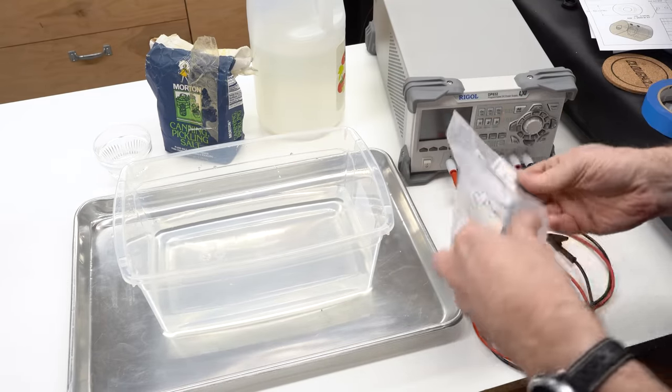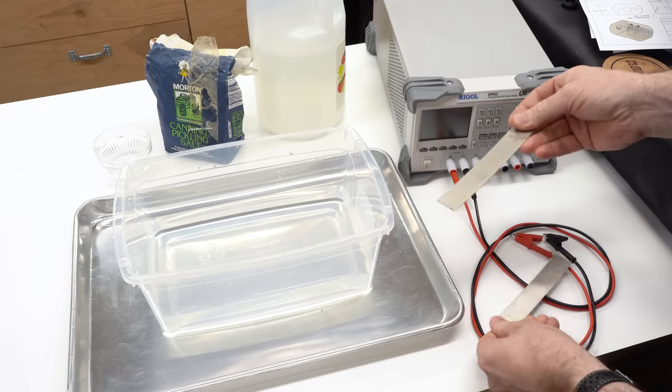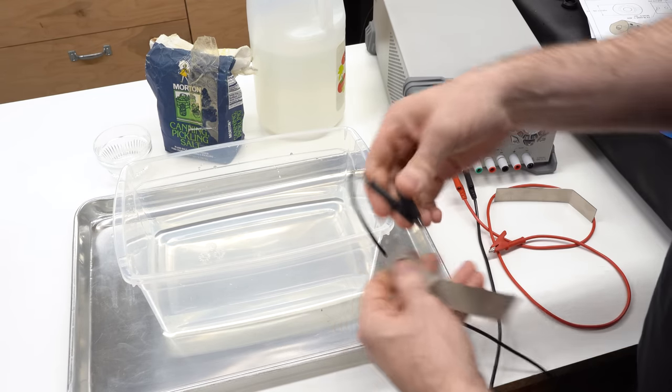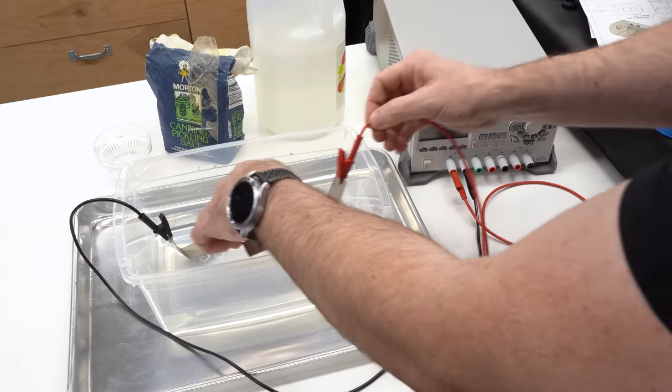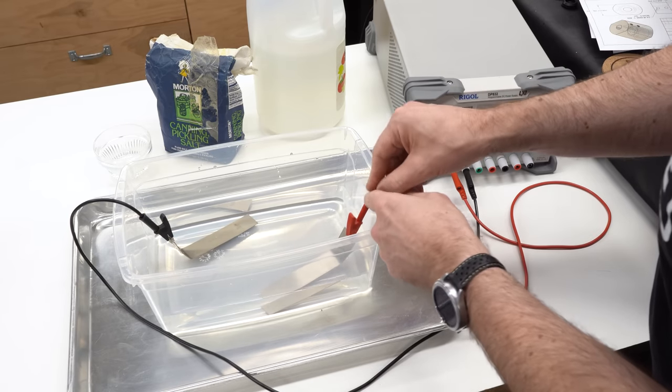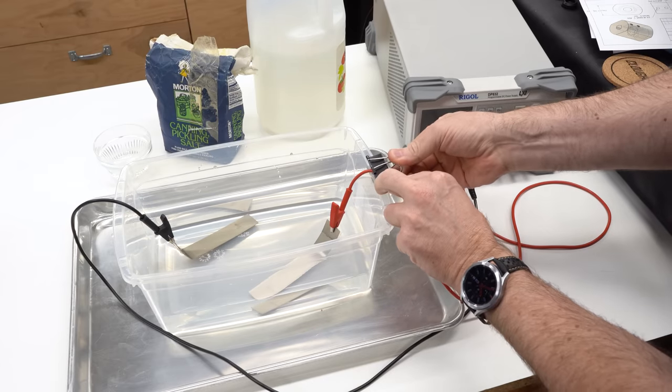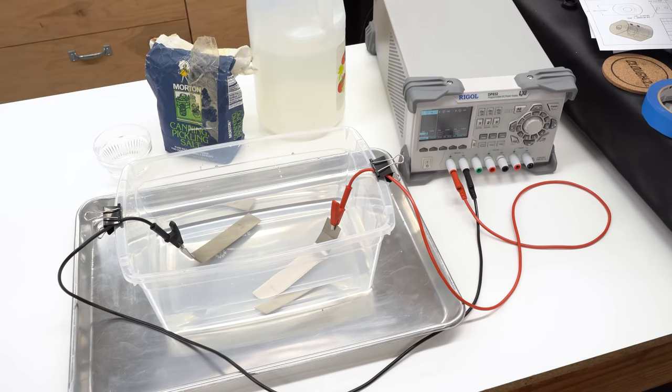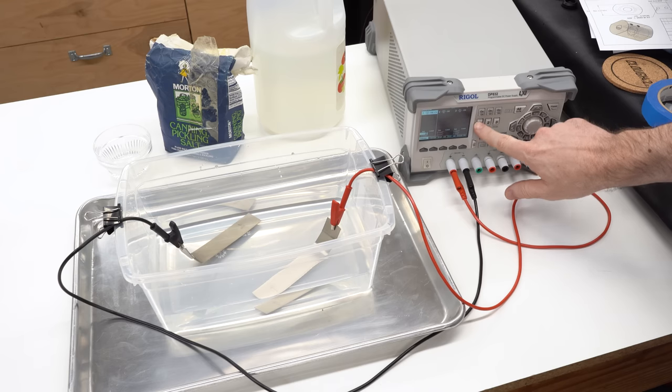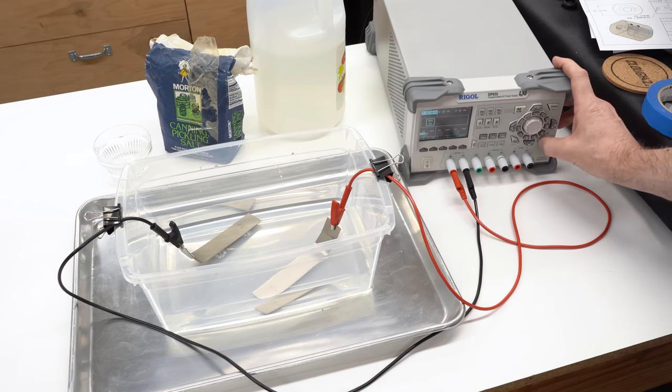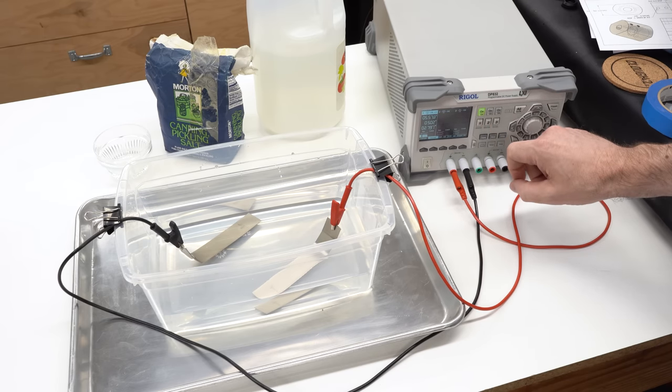Now I've got some strips of nickel here, and I just bought these off Amazon. They're advertised as 99.6% pure, which is probably about the minimum that you would want for an application like this. I'm going to try to bend them so that my alligator clips don't actually go into the bath, because I don't want to extract ions from the alligator clips. I just want to extract the nickel ions. Now I've got these set up on the positive and the negative, and we'll start by just running a little bit of current through the bath with a power supply.